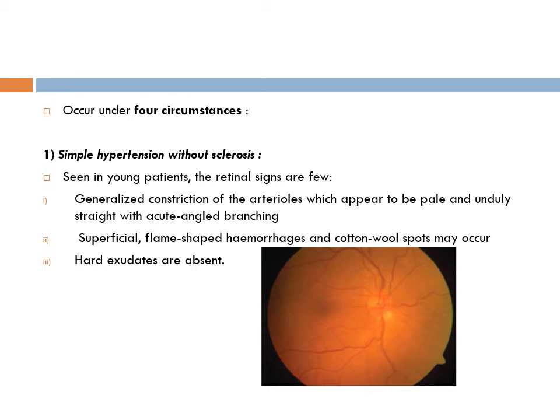In simple hypertension without sclerosis, the findings include straightening of arterioles, focal spasm, or generalized constriction of arterioles. These arterioles appear pale and unduly straight with acute angle branching. There may be superficial or flame-shaped hemorrhages and cotton wool spots. However, the features of sclerosis are absent. These are the characteristics of simple hypertension without sclerosis.